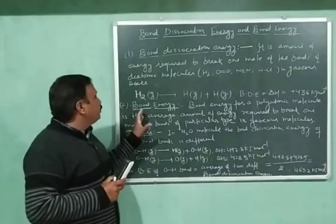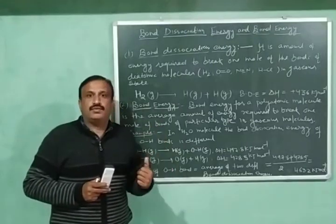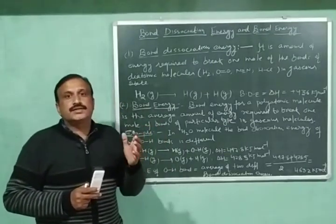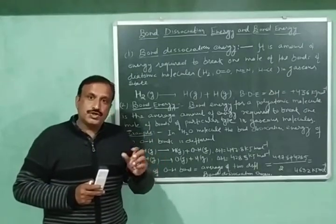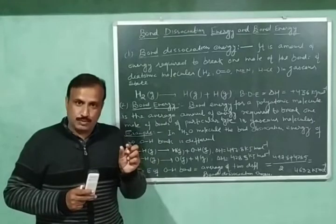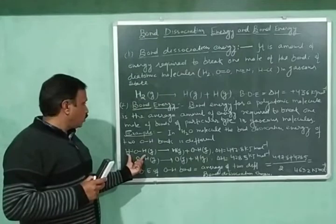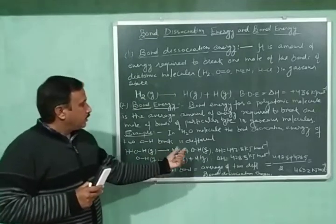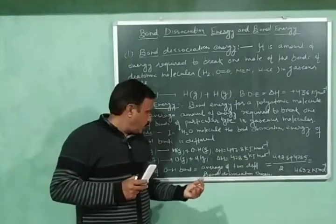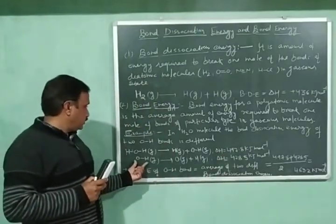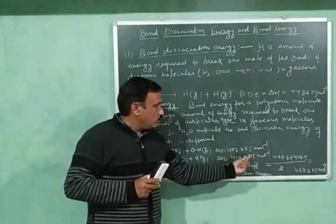Now let us explain bond energy with the example of the water molecule. In water molecules, the bond dissociation energies of the two O–H bonds are different. The first O–H bond is broken with a bond dissociation energy of 497.8 kJ per mole. The second O–H bond is broken with a bond dissociation energy of 428.5 kJ per mole.